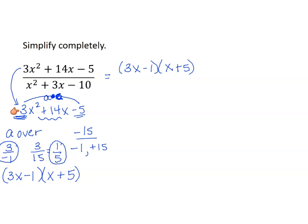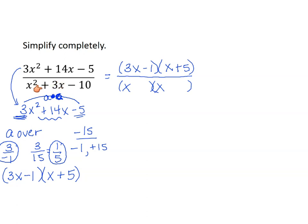When a is something other than 1, you multiply a and c, find factor pairs for the middle term, and then use the a-over method. For the bottom trinomial, a equals 1, so we can use quick factoring: x here and x here, looking for two numbers that multiply to negative 10 and add to positive 3. Those numbers are positive 5 and negative 2.